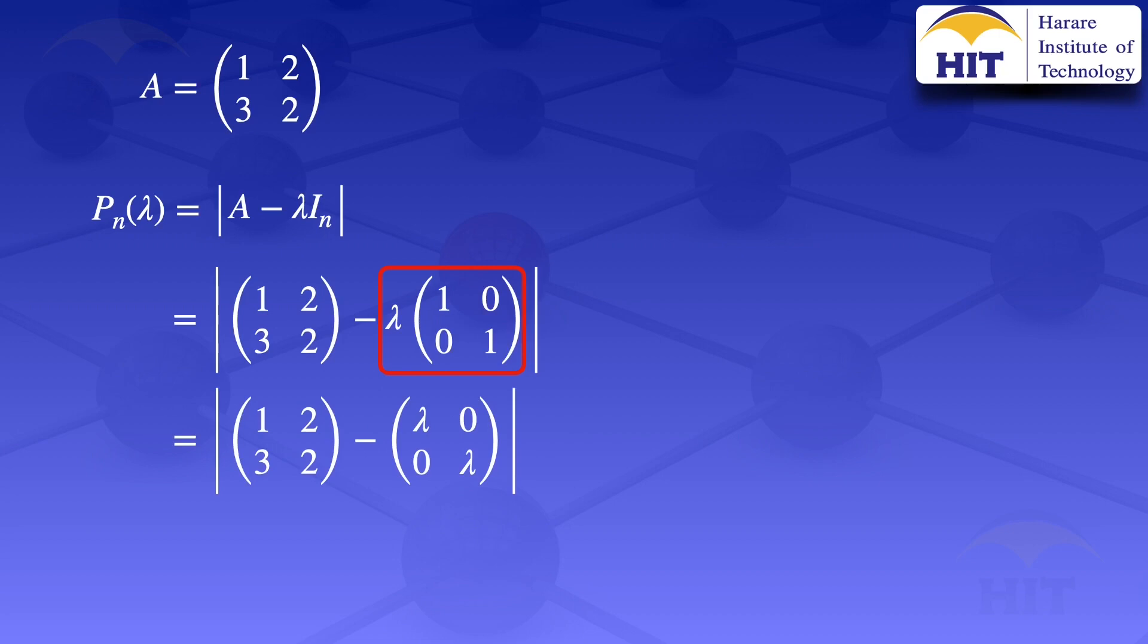What we now have is just the difference of two matrices, and we subtract the corresponding elements. And when we do that, we get the determinant of 1 minus lambda, 2, 3, 2 minus lambda.